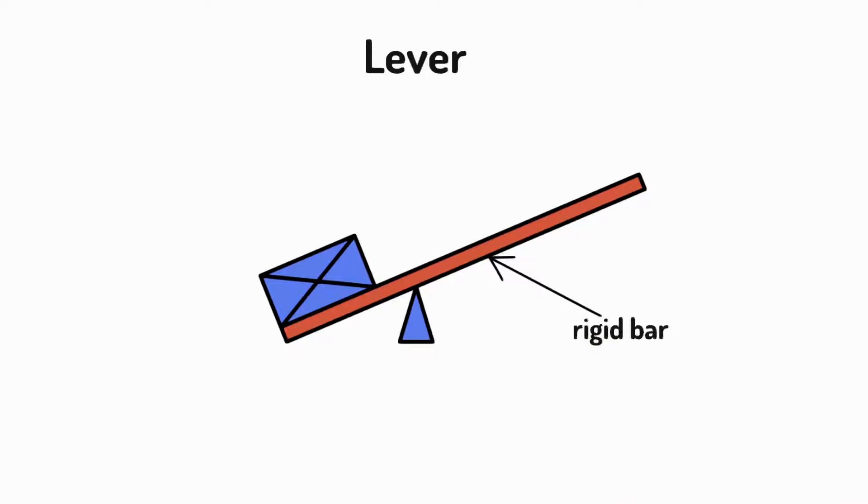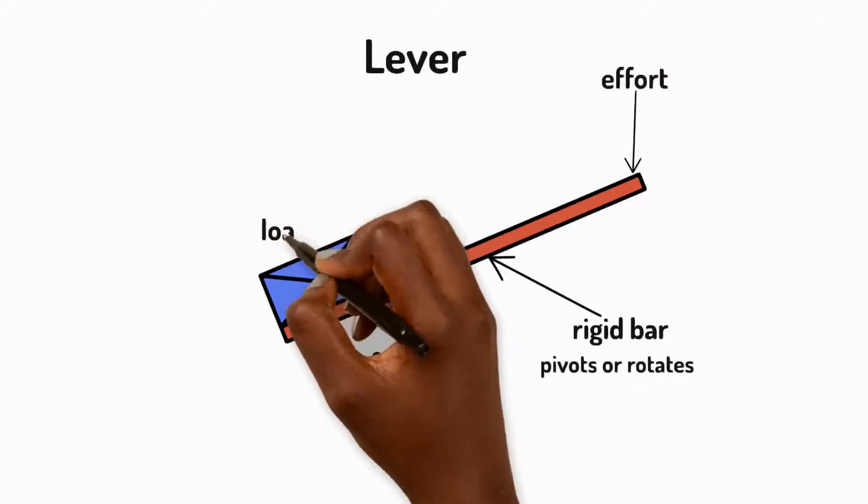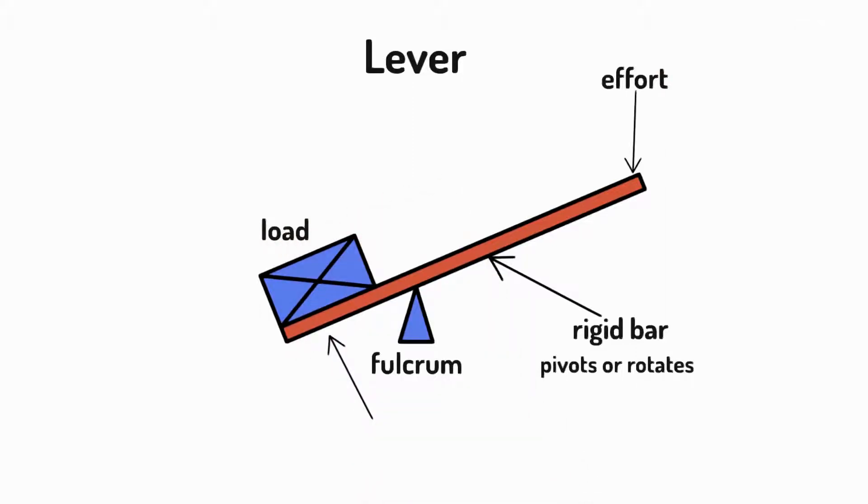Levers consist of a rigid bar that pivots or rotates around a fixed point called a fulcrum. With the right positioning, a little push down in one place, we call this an effort, allows a heavy load to be lifted up elsewhere.